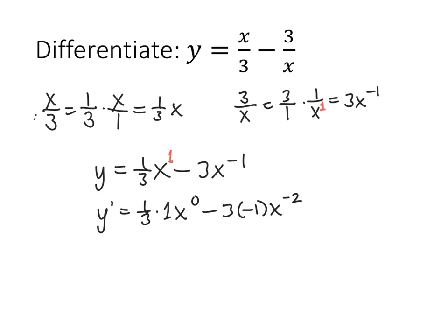And now we just have to do a little simplification. 1 times x to the 0. x to the 0 is 1, so that's just one-third times 1, which is one-third. Minus 3 times minus 1 is plus 3, and we can either leave this as x to the minus 2.